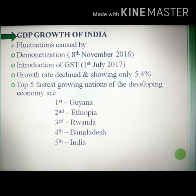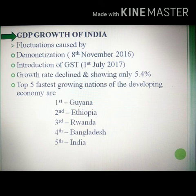Our growth rate declined. The World Bank projected a growth rate of 7.5% for India, but we are showing only 5.4%. India is considered the 5th fastest growing nation in the world — the 1st is Guyana, 2nd Ethiopia, 3rd Rwanda, 4th Bangladesh, and 5th India. We want to achieve economic prosperity so we can increase our GDP and achieve a developed economy.